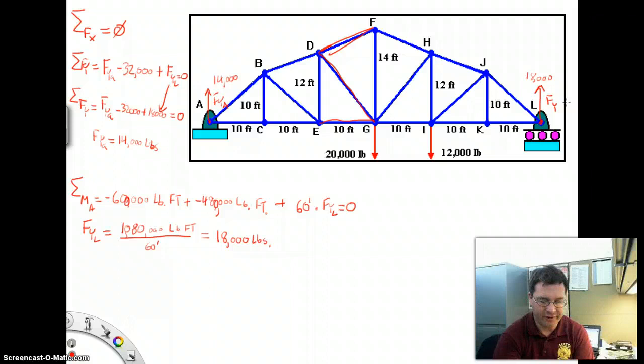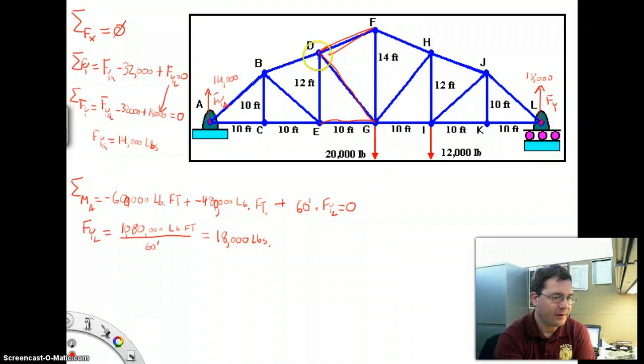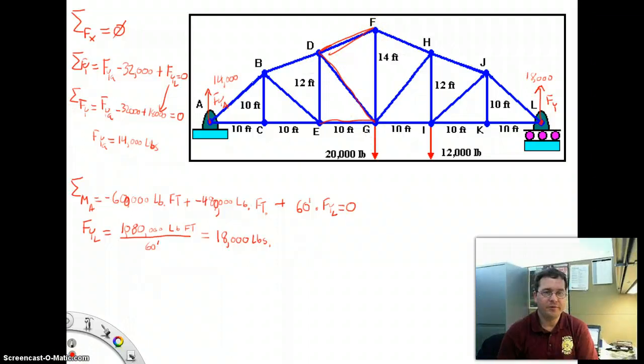We can write our numbers in. Over here, this is 14,000. Over here, this is 18,000. We've already determined that the X components are 0. And now we're set to determine the forces in EG, DG, and DF. Recall there are essentially two ways to solve this type of problem. One would be method of sections where we would chop this truss into a couple of pieces. The other is method of joints. And I think for this problem, method of joints is probably the easiest way to start.